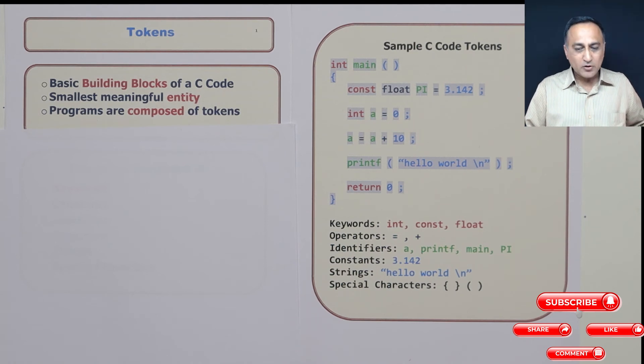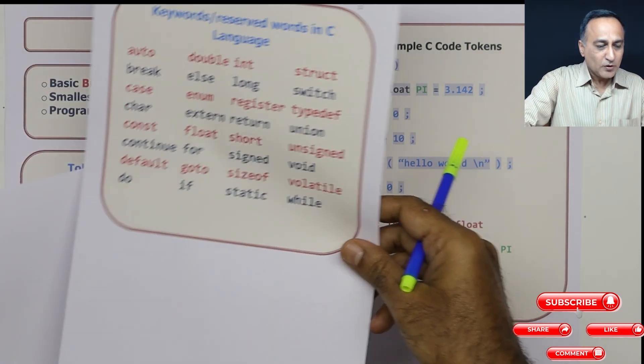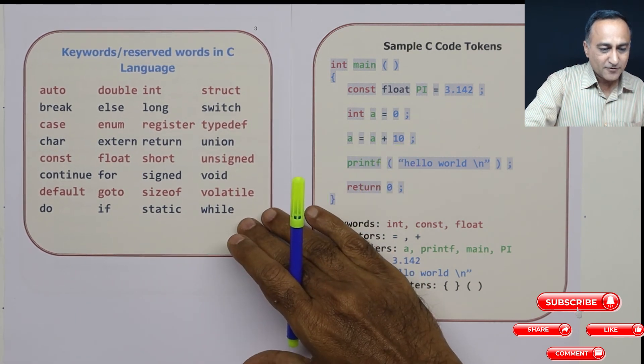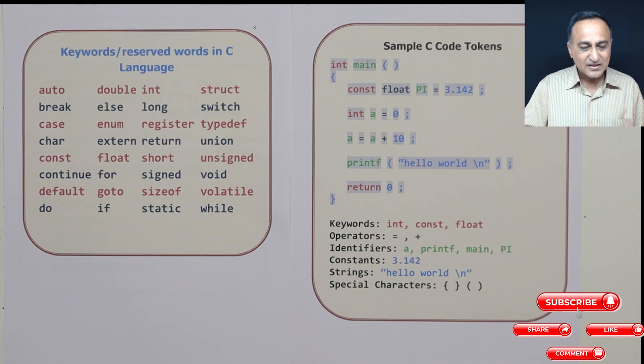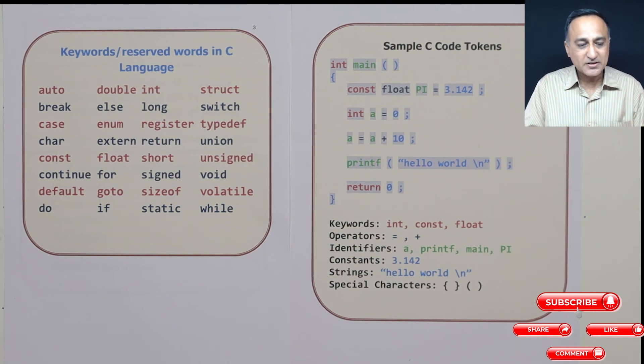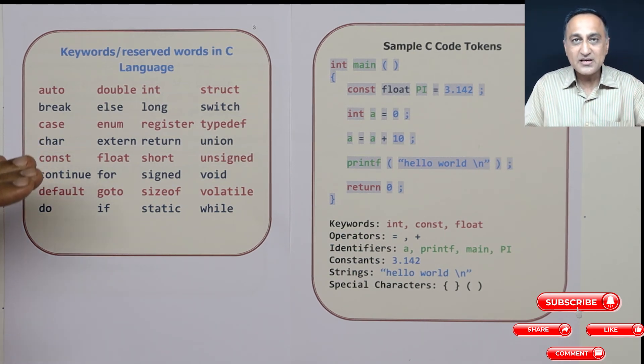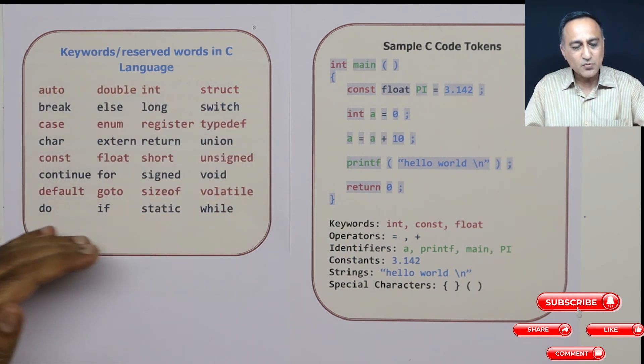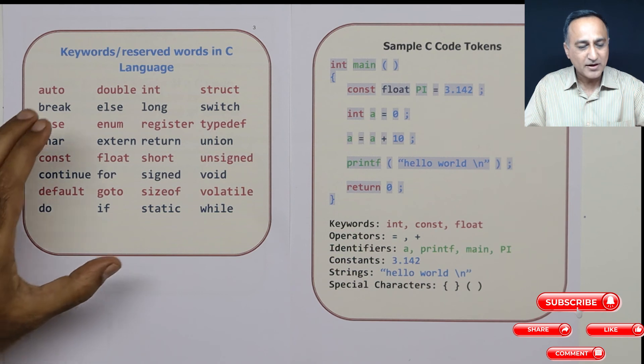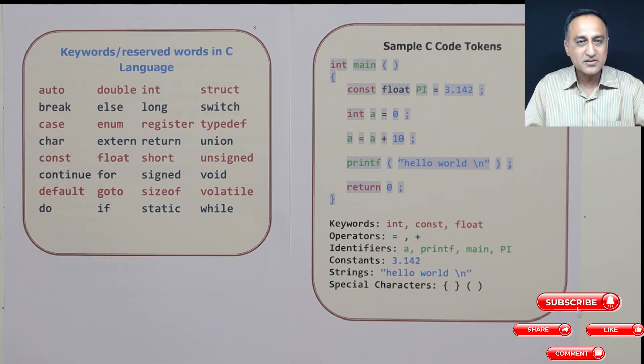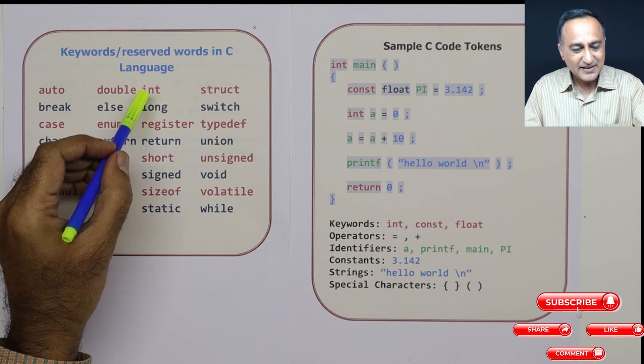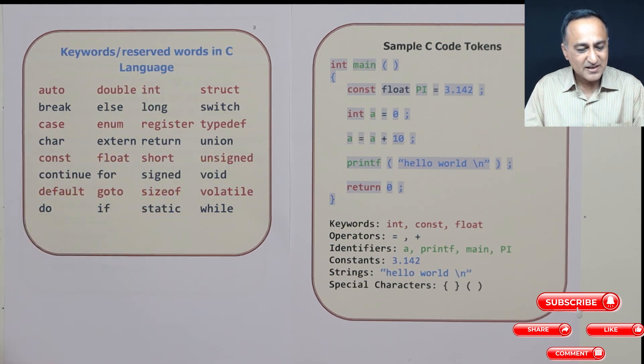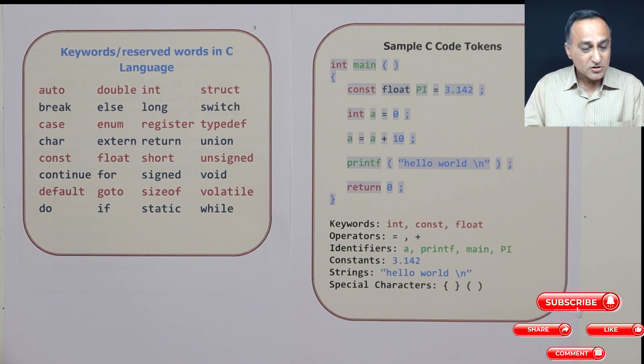Now I need to talk a little bit about keywords. If you look in the C program, a C language has basically 32 keywords. As our journey in C programming continues, you'll be able to get a feel of all these keywords. We will be encountering them and you will get a detailed idea of what the keywords really mean. So far, we have used keywords like int, long, short, unsigned.